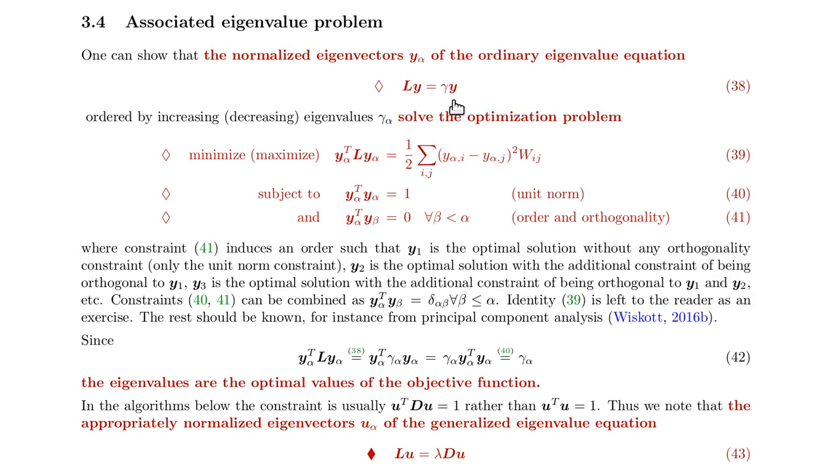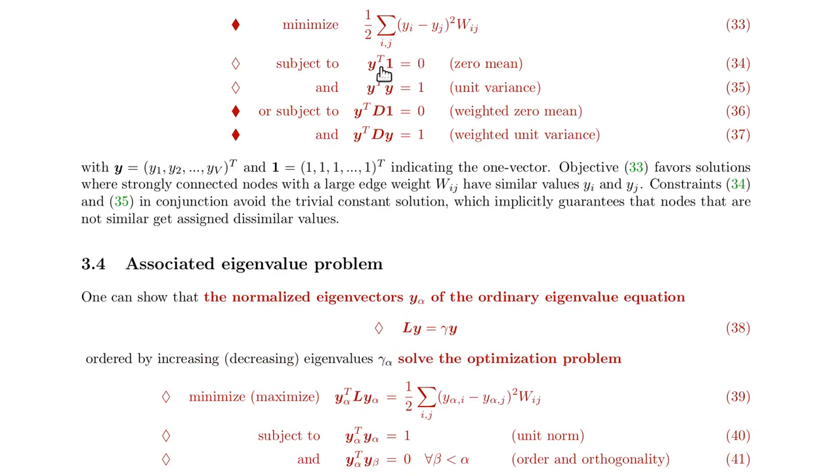Now, we know already that the 1, 1, 1, 1, 1 vector is one of the eigenvectors. It's actually the first eigenvector with eigenvalue 0. And that in some sense would be a good solution if we didn't have this constraint here. If we didn't have this constraint here.